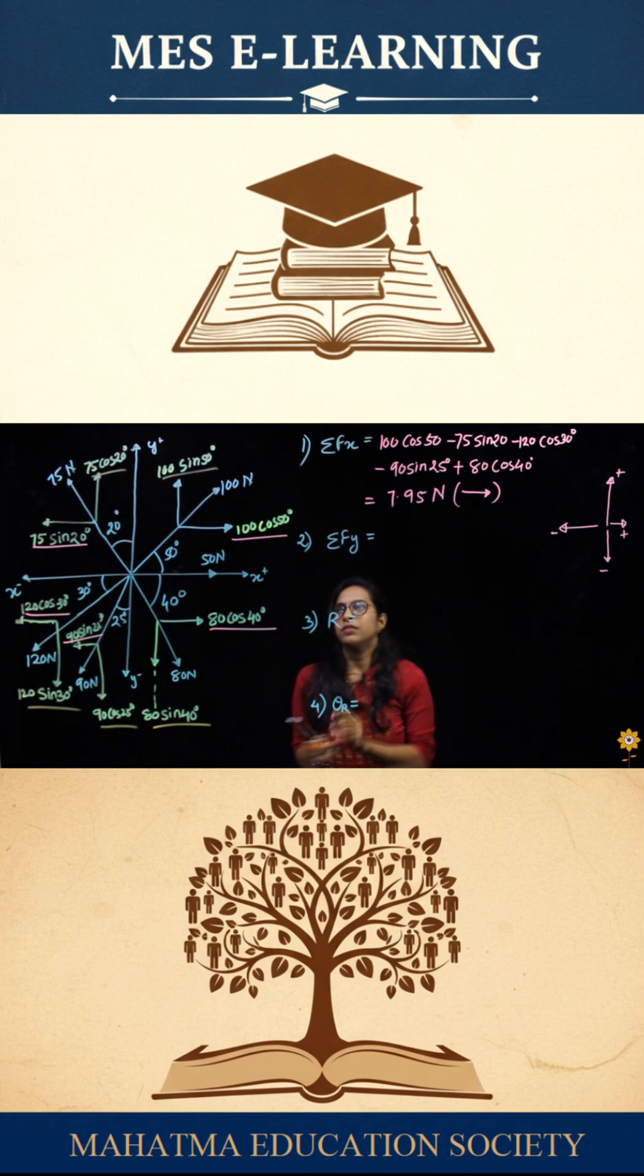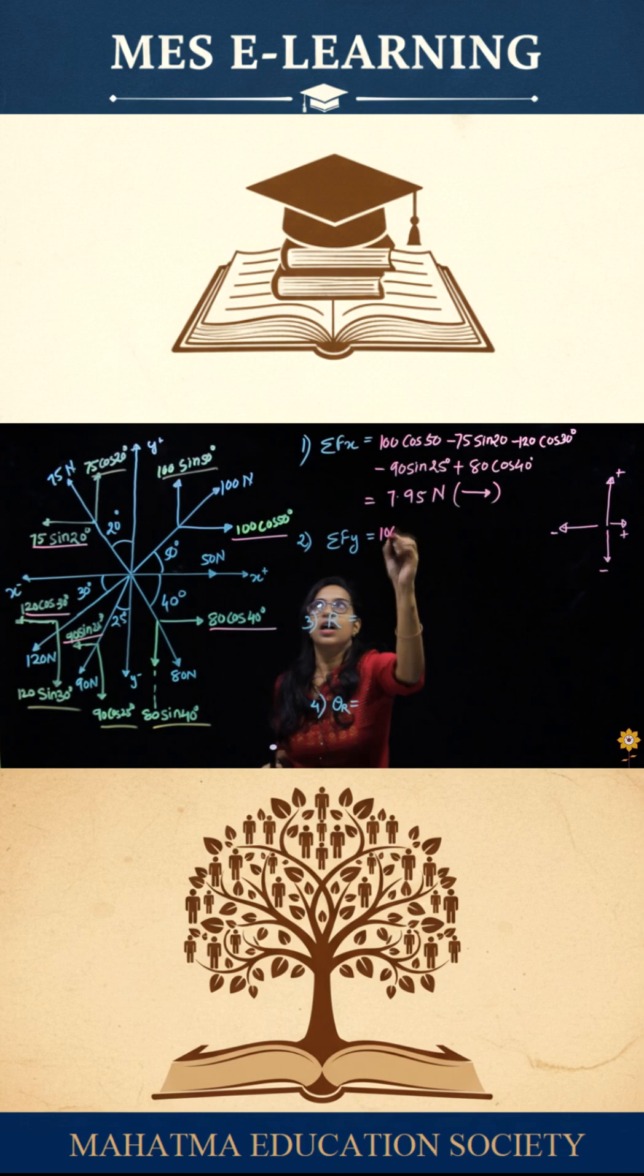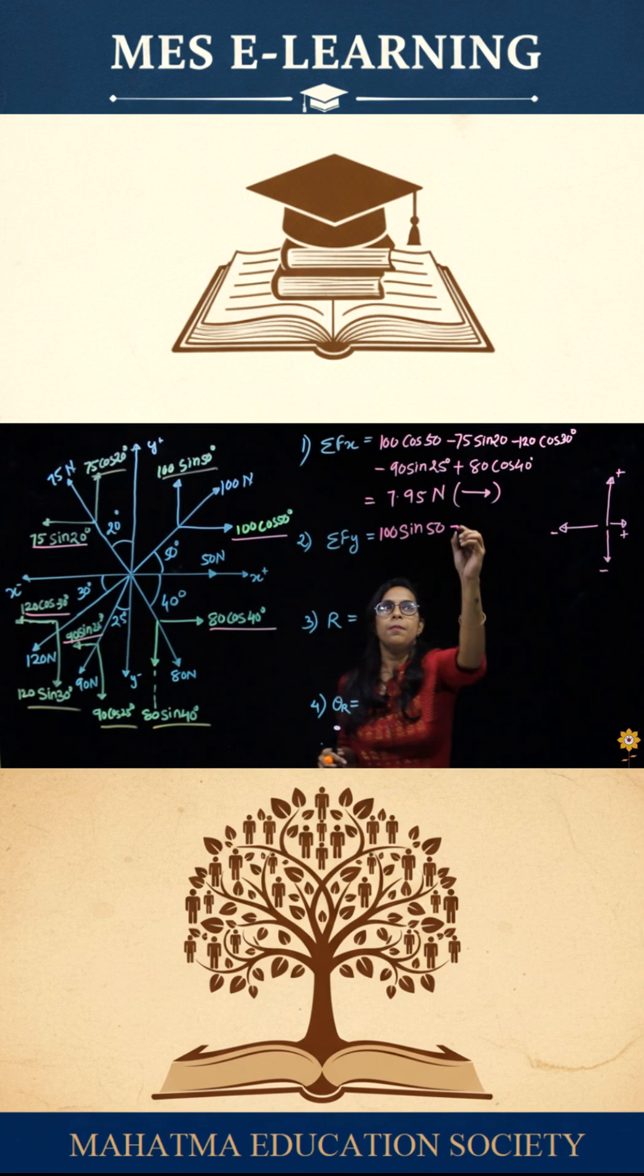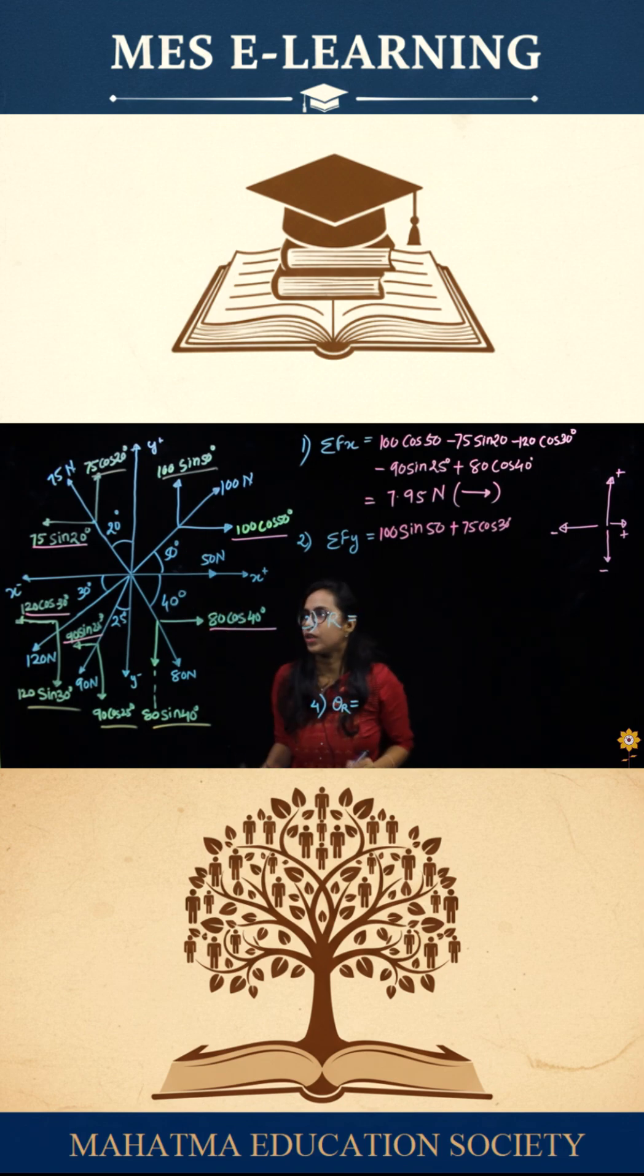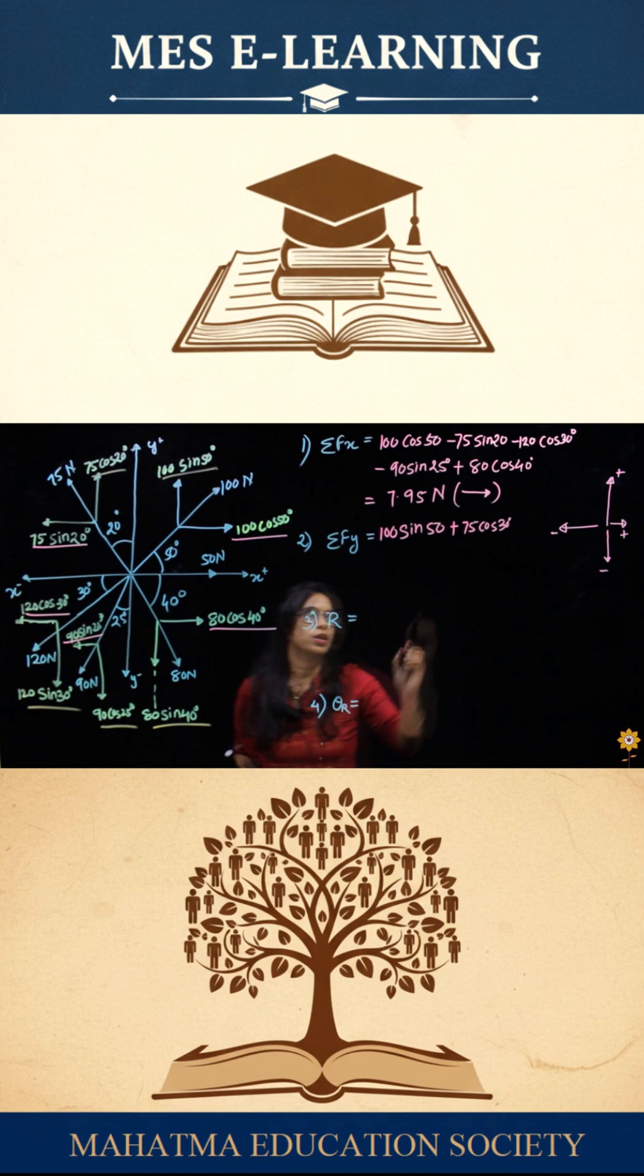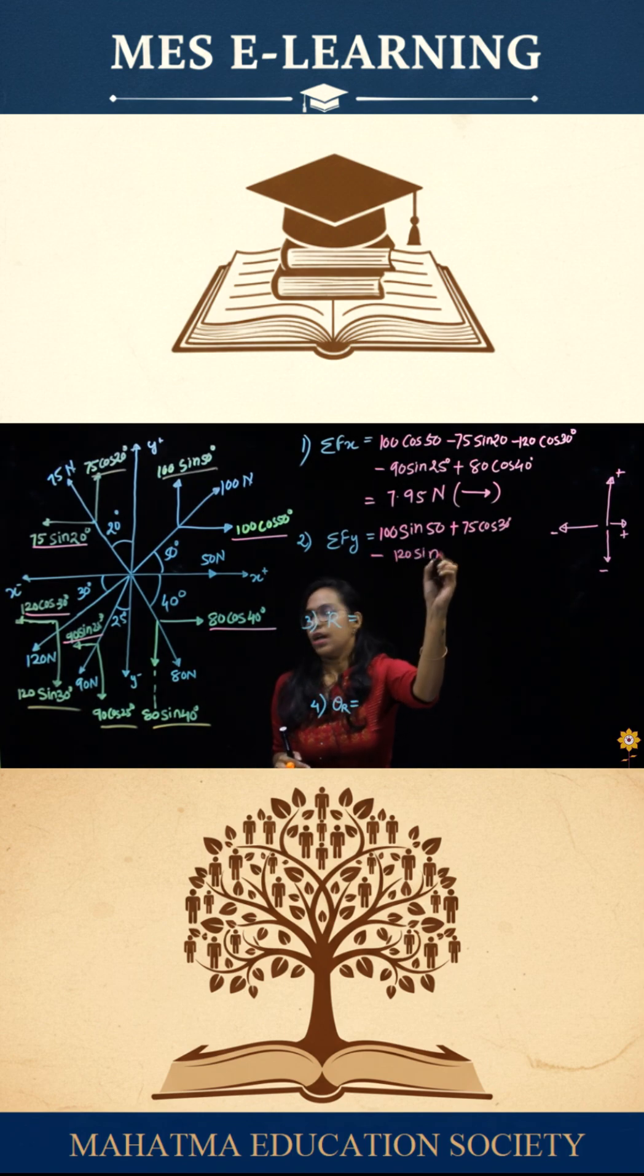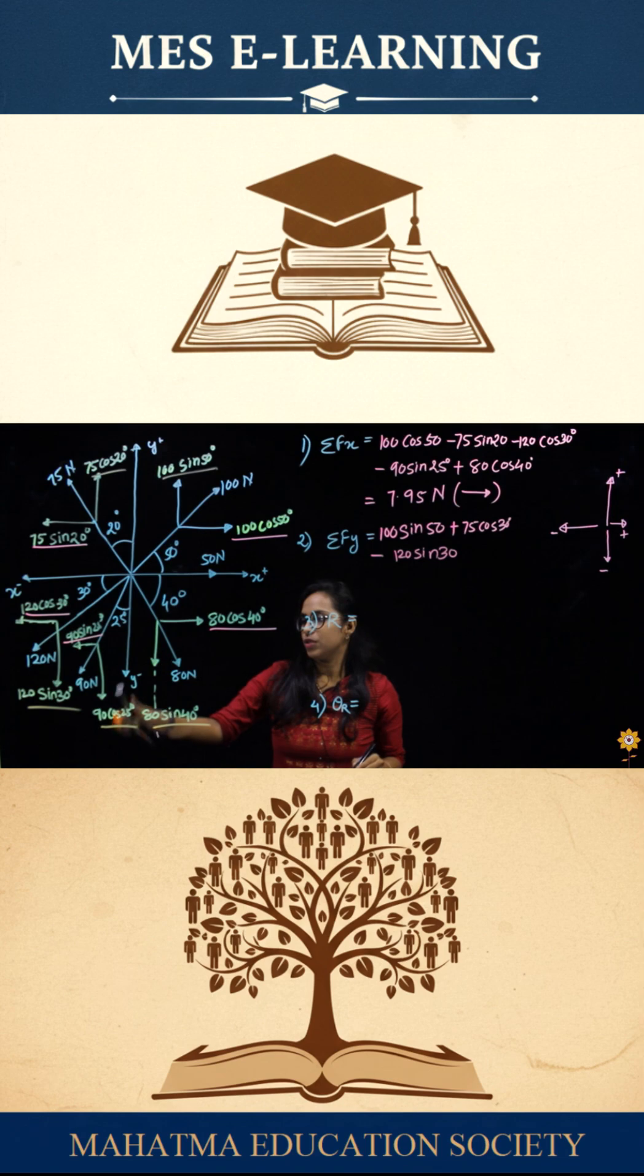So if I have to write the equation according to the sign convention, this force is going upward, so it would be 100 sine 50, that is positive, plus 75 cos 30, which is also positive because it is going in the upward direction. This is 120 sine 30 in the downward direction, so it would be minus 120 sine 30.